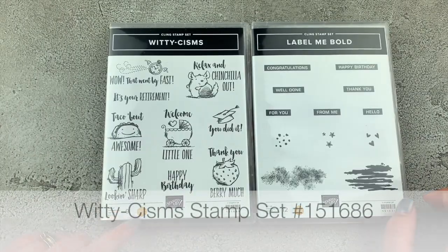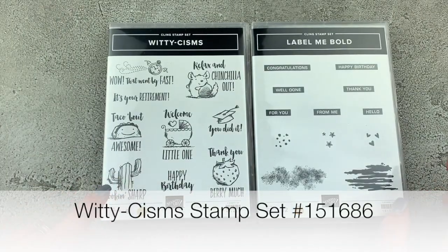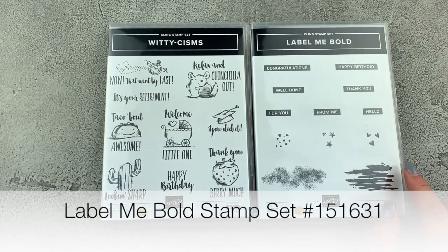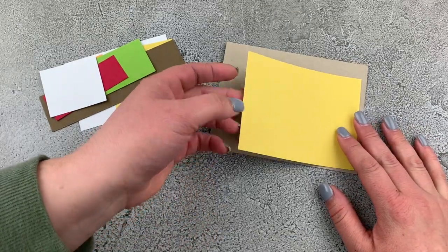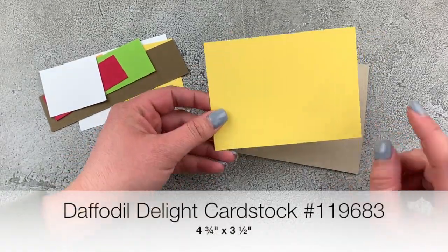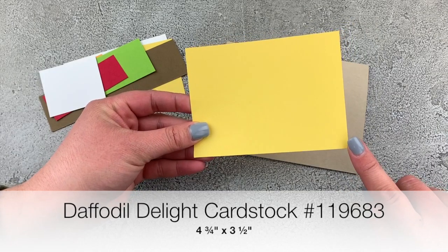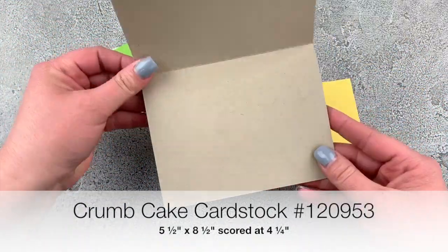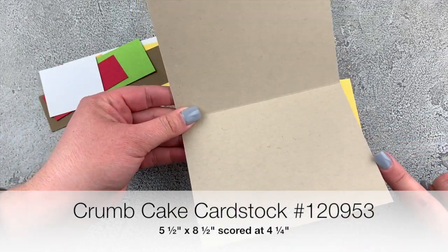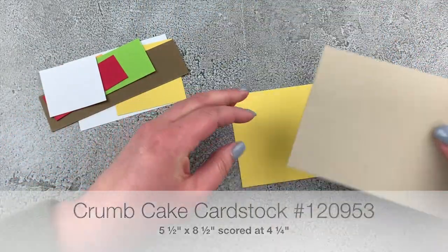The two stamp sets we're using today are called Witty-cisms and Label Me Bold from the Spring 2020 Stampin' Up Catalog. The cardstock pieces I have here are a piece of Daffodil Delight that is 4 3/4 by 3 1/2 inches. I also have a Crumb Cake card base that is 5 1/2 by 8 1/2, scored at 4 1/4.